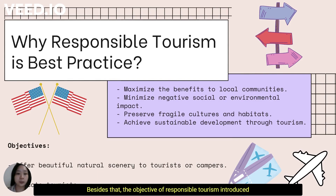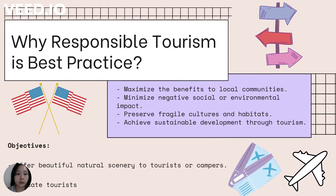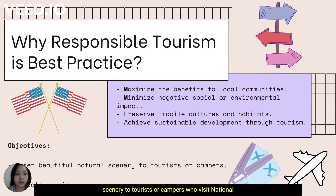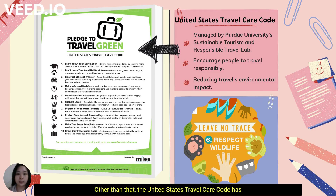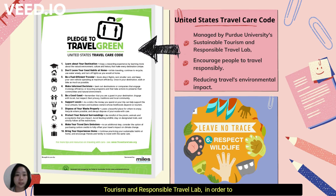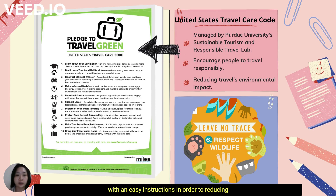Besides that, the objective of responsible tourism introduced by NPS not only wants to offer beautiful natural scenery to tourists or campers who visit national parks, but also aims to educate tourists about the significance of protecting natural resources and retaining the beauty of mother nature. Furthermore, the United States Travel Care Code has been developed and managed by Purdue University Sustainable Tourism and Responsible Travel Labs in order to encourage people to travel responsibly and provide travelers with easy instructions to reduce their travel environmental impact.